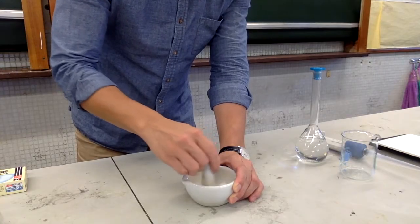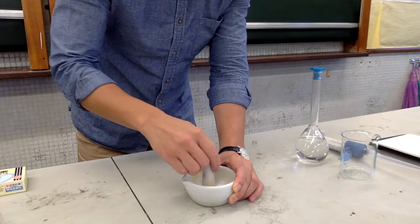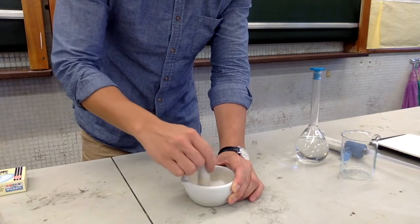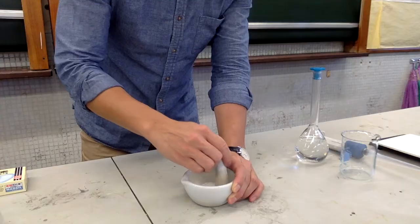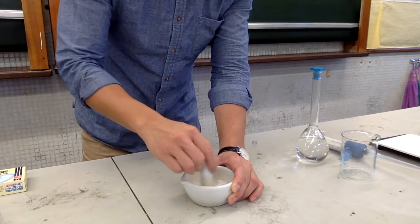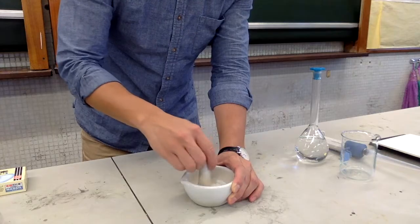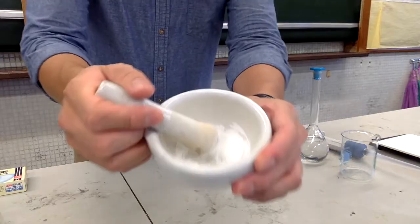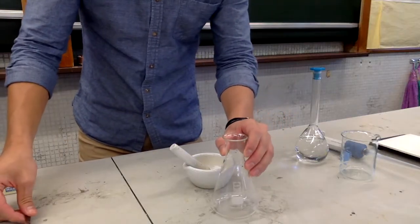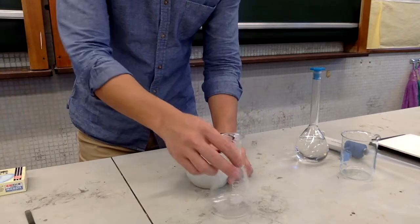This step is to increase the surface area of the antacid tablet so that it can react faster with the hydrochloric acid. This is to make sure that all the active ingredient, especially the aluminum hydroxide, has reacted with the acid. Now, carefully transfer all the powder into a conical flask.